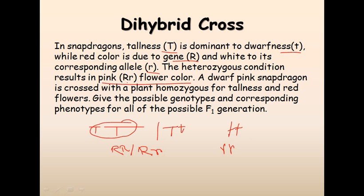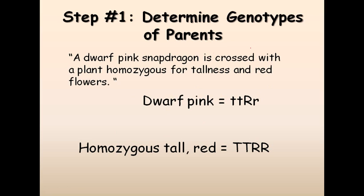An important point is that tall red crossed with tall white produces a pink flower, which cannot be justified by strict Mendelian inheritance, since according to Mendel, white and red should not influence each other. Now determining the genotypes of the parents: a dwarf pink snapdragon is tt Rr, and the plant homozygous for tallness and red is TT RR.